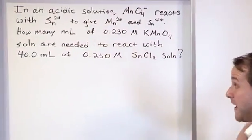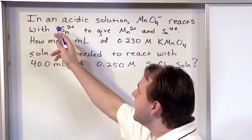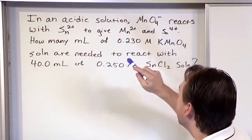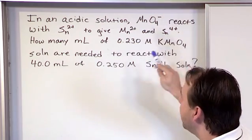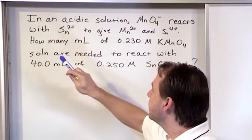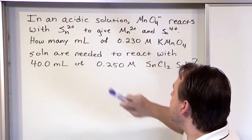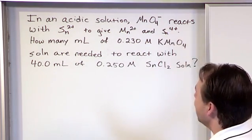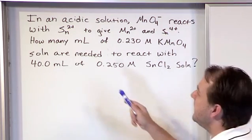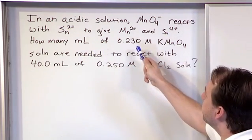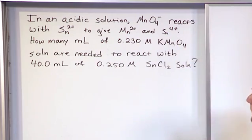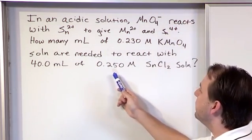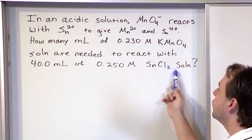And so what we have now is a stoichiometry problem that goes like this. In an acidic solution, this is called a permanganate ion. This permanganate ion reacts with tin, this tin ion, to give a manganese ion and another tin ion with a different charge. How many milliliters of 0.230 M potassium permanganate solution are needed to react with 40.0 mL of 0.250 M tin chloride solution?